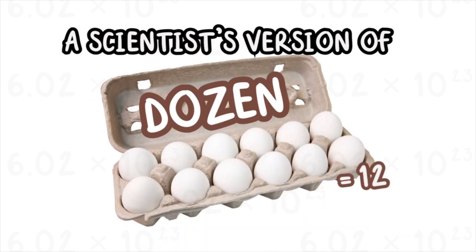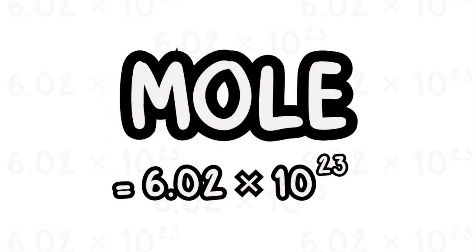Think of a mole like a scientist's version of a dozen. A dozen always means 12, right? A mole always means 6.02 times 10 to the power of 23 things, just a much, much bigger group.